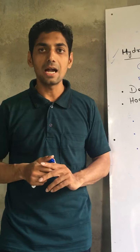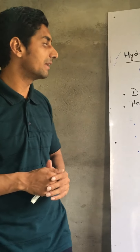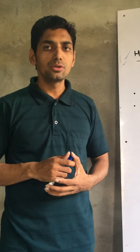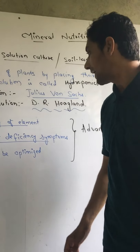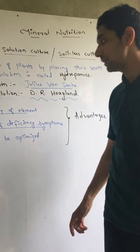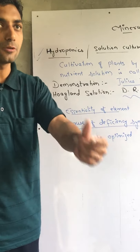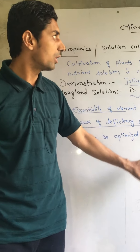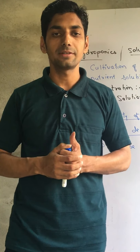So this is all about hydroponics — solution culture or soil-less culture. It is the technique of cultivation of plants by placing their roots in the nutrient solution, without soil. First demonstrated by Julius Von Sachs; the most common nutrient solution used is the Hoagland solution. The advantages include identifying the essentiality of a particular element, finding out deficiency symptoms caused by a particular element, and pH optimization. This concludes the hydroponics segment of the Mineral Nutrition unit. Thank you.